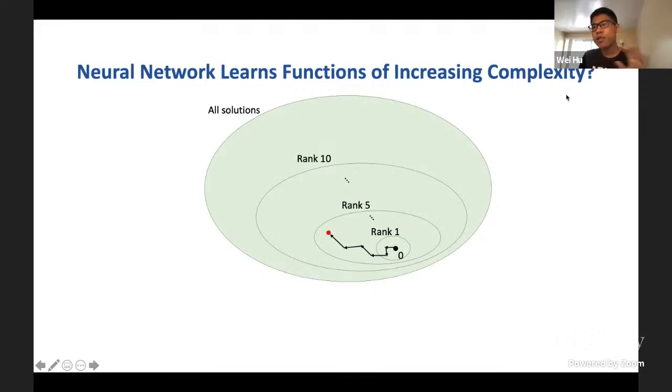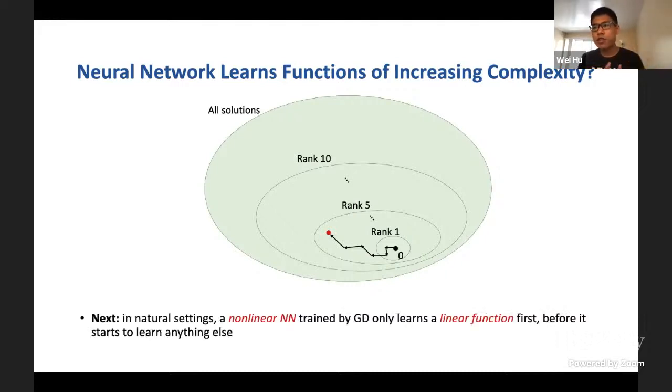We can view this dynamic picture as indicating a more general statement that maybe neural network learns functions of increasing complexity during training. The notion of the complexity in this example was the rank of the matrix. This general hypothesis is believed to be perhaps true in some sense, but in general we still don't know what is the right way to characterize the complexity of neural networks, and especially in non-linear deep neural networks this becomes much more challenging than linear networks.